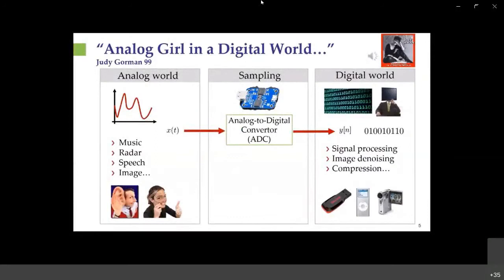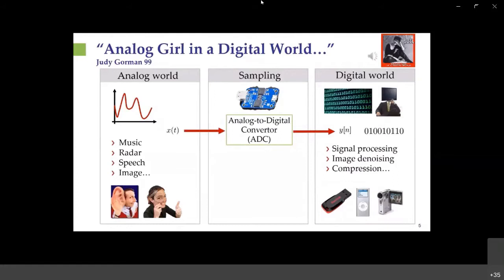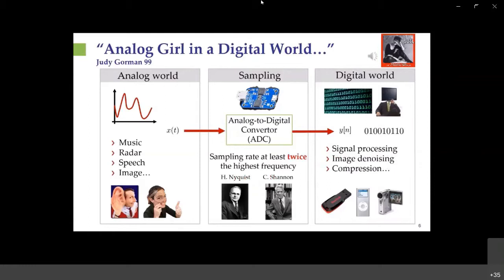Today, more and more processing is done by digital devices, but the world around us is analog. To enable digital processing, we convert a continuous-time signal such as speech into samples using an analog-to-digital converter. The ADC first samples the signal at certain points in time and then represents these sample values by a sequence of bits. Today, the sampling rate used in essentially all ADCs follows the well-known Shannon-Nyquist theorem, which states that the sampling rate has to be at least twice the highest signal frequency.